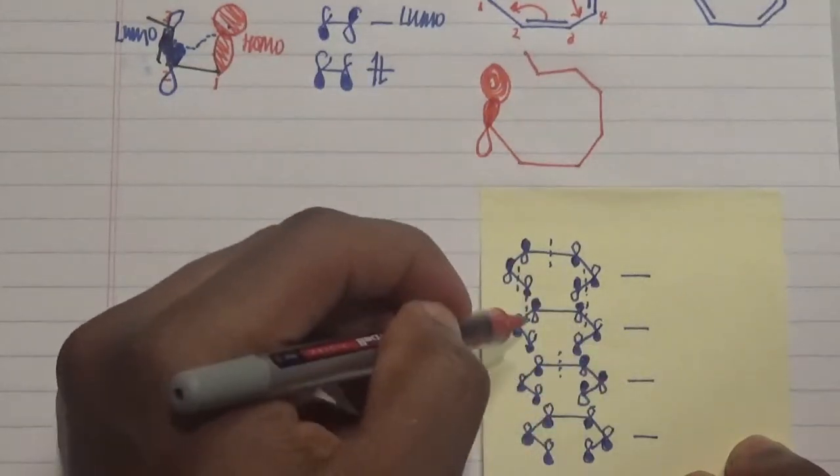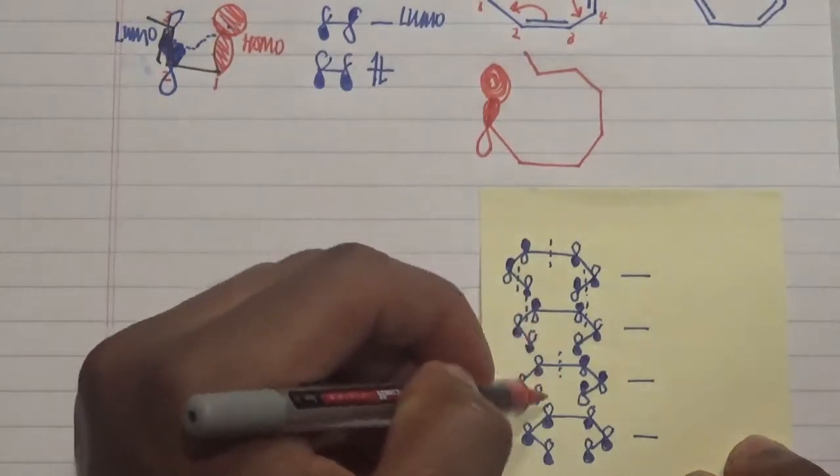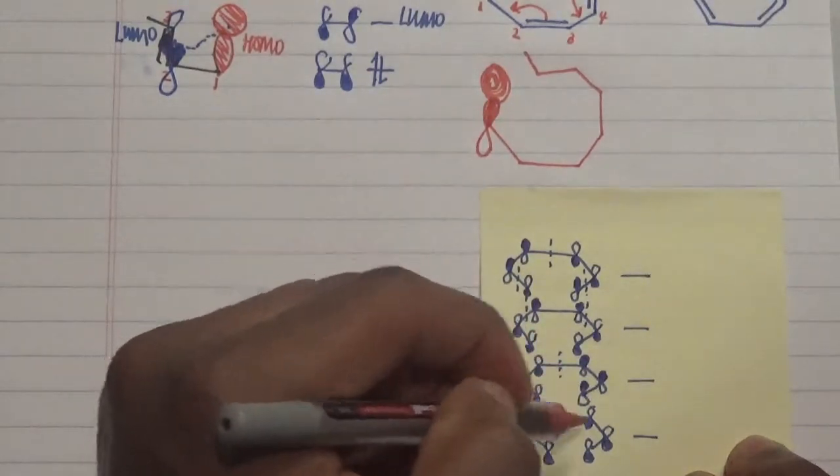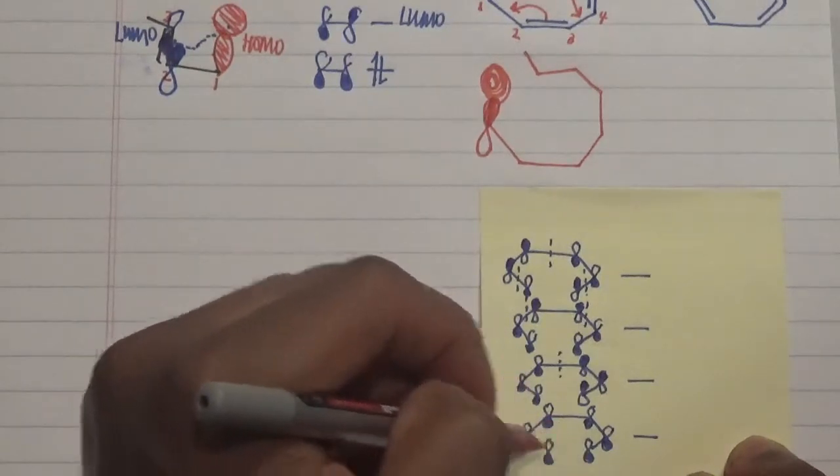We have 1, 2, 3, 4. Number 4 has 3 nodes. Number 3 has 2 nodes. Number 2 has 1 node. And number 1, which is the lowest energy level, has no node with all in phase.